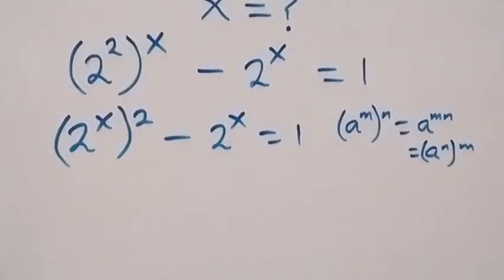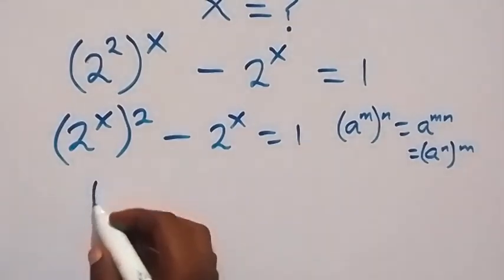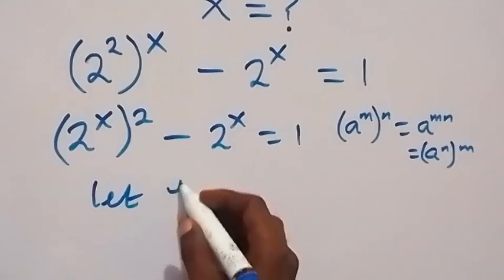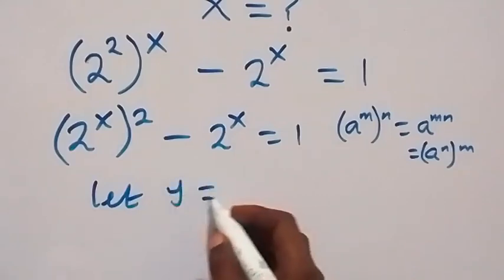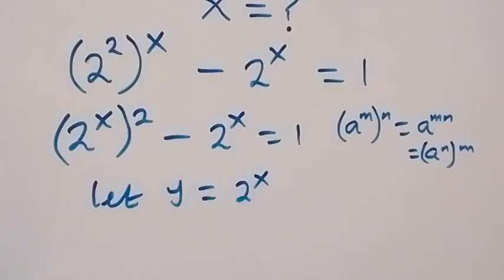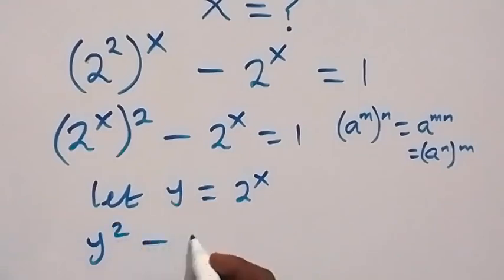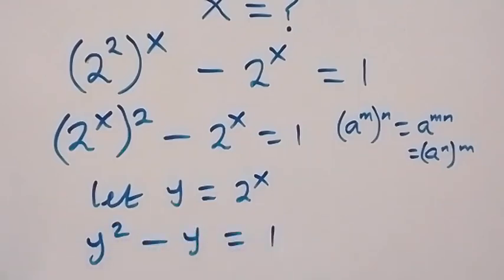From here, we have 2 raised to power x common. Let's represent 2 raised to power x with a letter. So let y be equal to 2 raised to power x. Then this can be written as y squared minus y equals to 1.